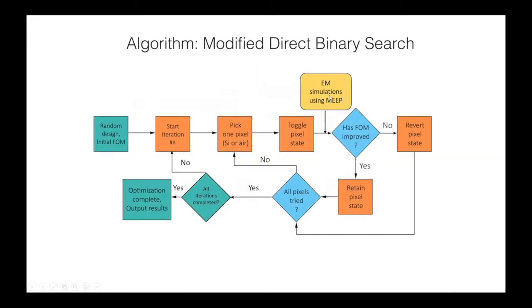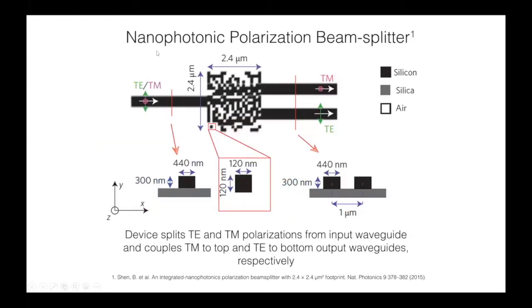Where MEEP factors in is that each time we run the electromagnetic simulations, we use the guided mode simulation. Here's one of the examples of the devices that we demonstrated — it's a polarization beam splitter. Imagine on the left-hand side single-mode waveguide you have two polarization states coming in, TE and TM. The idea behind this device is that the TM mode will couple to the top waveguide, and the TE mode will couple to the bottom waveguide. The fabrication was on a very standard silicon-on-insulator platform.